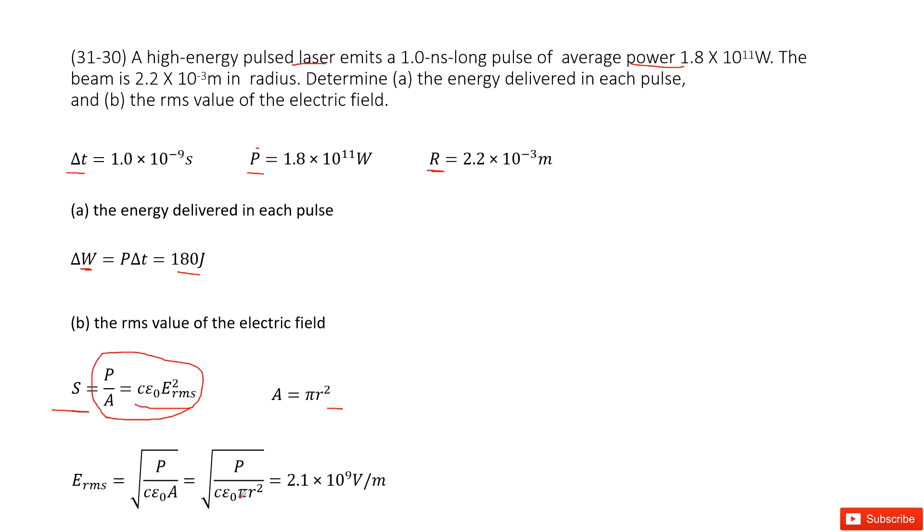Now, input the A as π R squared. Now, you get the term that looks like this one. In this term, you can see all the quantities are given. So input all the given quantities, you can get the answer there. Thank you.